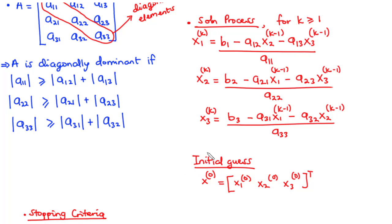Before starting the iteration process, you will be given an initial guess in the form x(0). This initial guess is what we put first into equations 1, 2, and 3 to obtain the new set of x values. When you put in the initial guess to obtain the new set of values, you have performed one iteration. If you then put the new values back into the system to obtain another new set, that is the second iteration, and so on. If no initial guess is provided, assume x1(0) = x2(0) = x3(0) = 0.